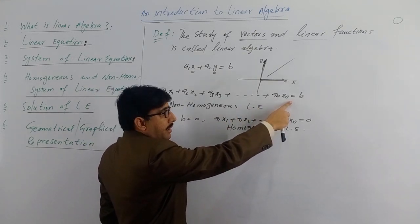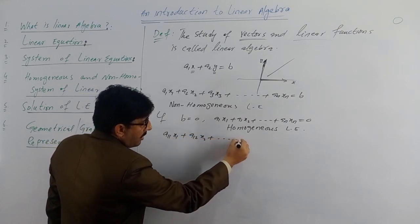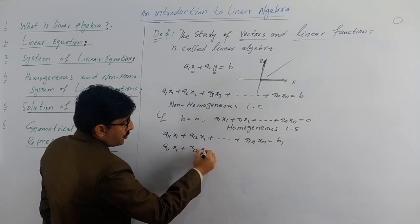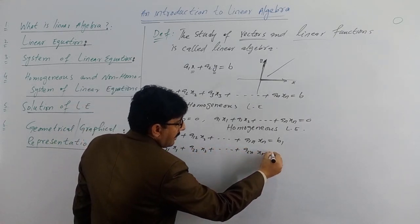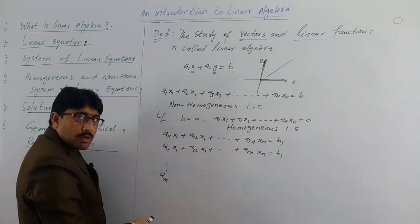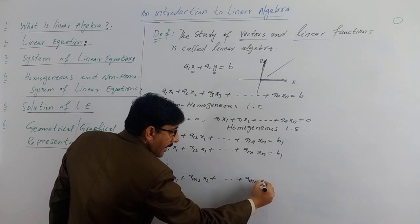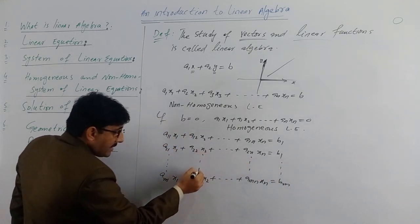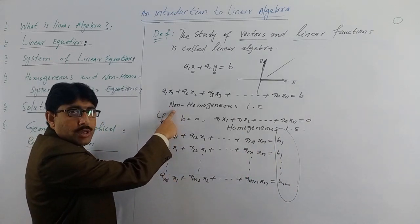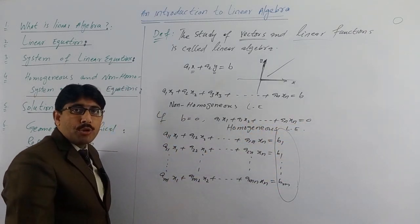اب system of equation کیا ہے؟ a11x1 + a12x2 + ... + a1nxn = b1، a21x1 + a22x2 + ... + a2nxn = b2، اور similarly am1x1 + am2x2 + ... + amnxn = bm. This is called the system of linear equations. چونکہ یہاں پر تمام b موجود ہیں، اس لئے this is a non-homogeneous system of linear equations۔ اور اگر ان تمام b کو zero کر دیں تو that is called a homogeneous system of linear equations۔